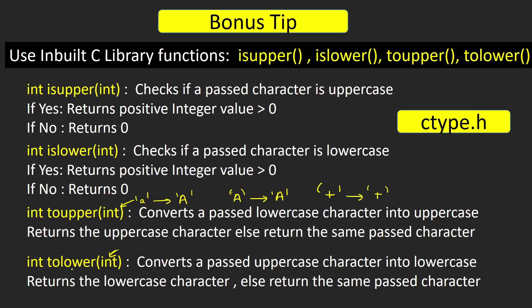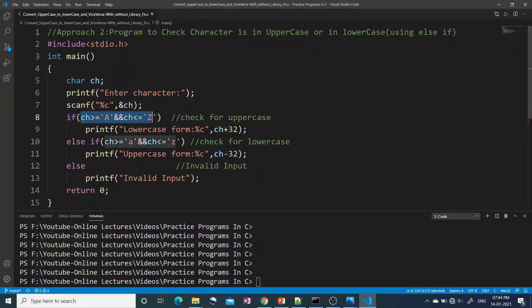tolower converts an uppercase character passed to it into lowercase. If you pass a lowercase character or a non-alphabet, it returns that same character. You might wonder why the function arguments are of type int when we're passing a character — as you know, characters have ASCII integer values, so the character is replaced by its ASCII value. When the function returns, we get back the ASCII value of the corresponding character, which we print using '%c'.